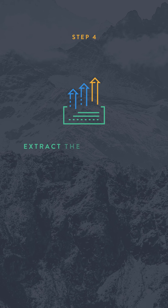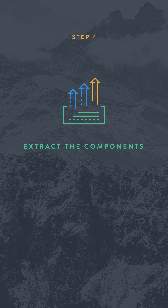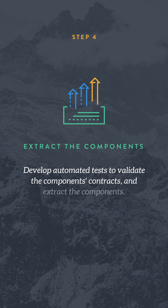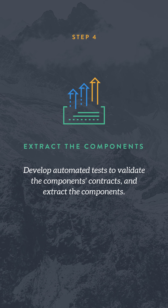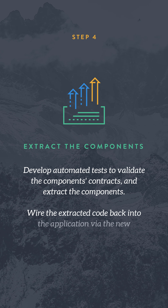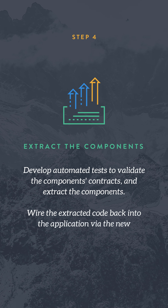Step four: extract the components. Develop automated tests to validate the component's contracts and extract the components. Wire the extracted code back into the application via the new contracts and verify its behavior has not changed.